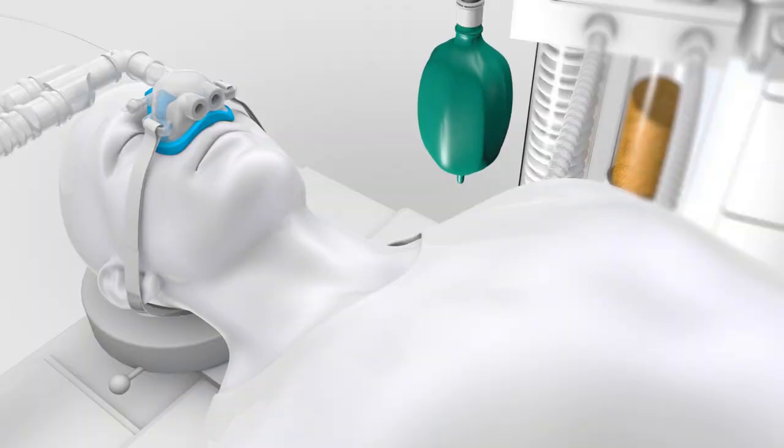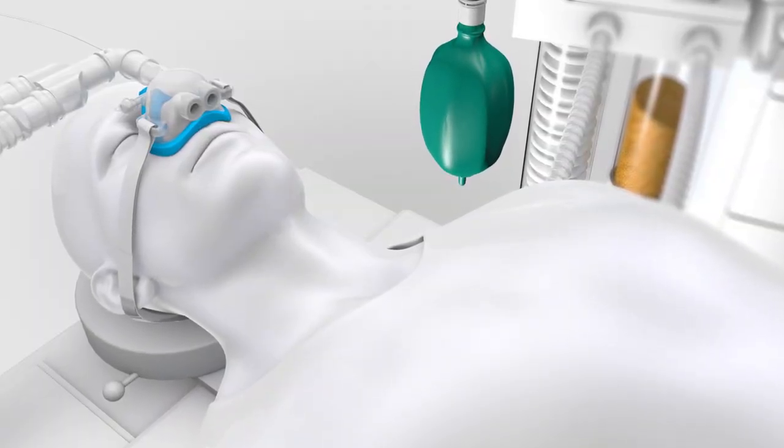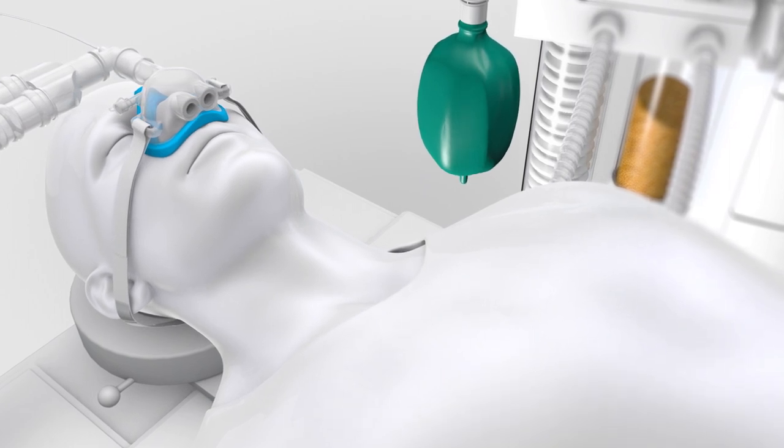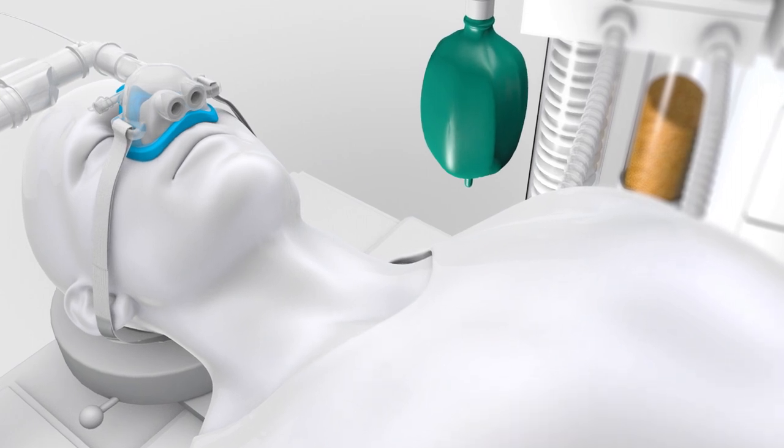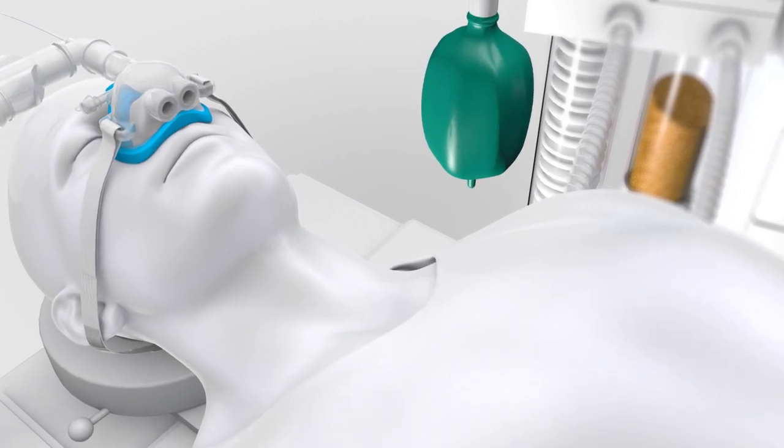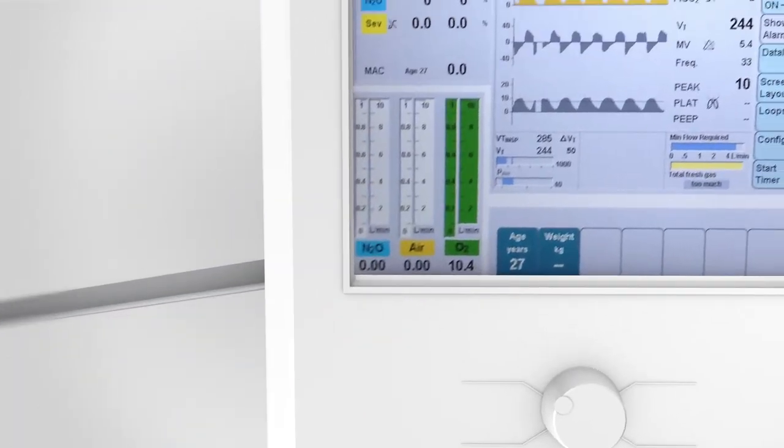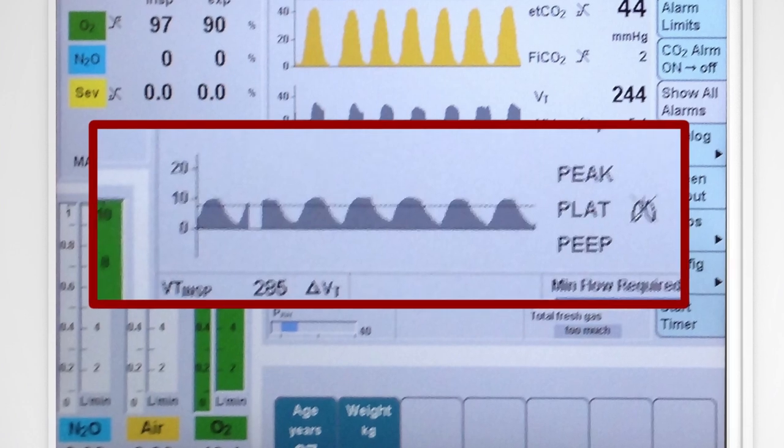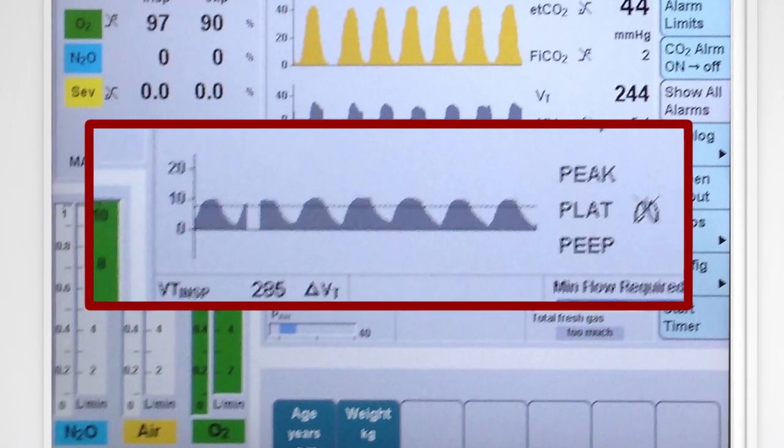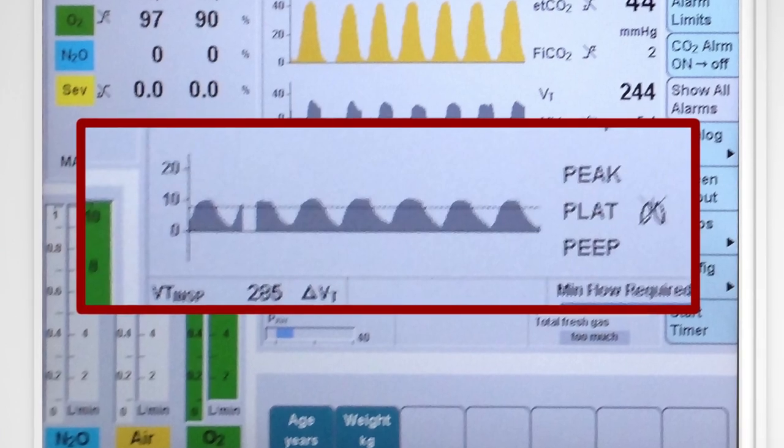With the SuperNova device properly sealed on the patient's face and fresh gas flows set at a rate higher than minute ventilation, the reservoir bag will fill and pressurize. Visual inspection of the reservoir bag will reveal intermittent deflation indicating successful patient inhalation. In addition, the pressure manometer and waveform on the ventilator's monitor will show intermittent decreases in pressure during spontaneous ventilation, another way of monitoring successful inhalation.